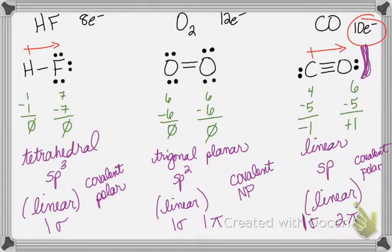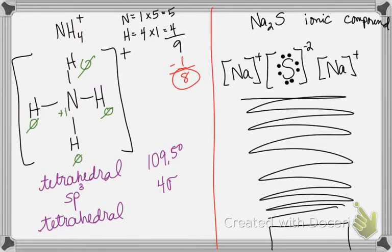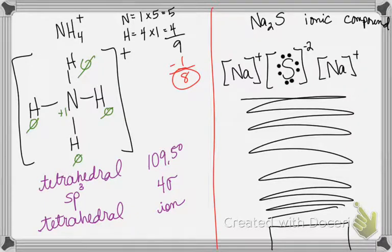Ammonium (NH₄⁺) — it's an ion, so we do not answer polar or nonpolar because it clearly has a charge. Just for argument's sake, if it weren't an ion — N with four H's, perfectly tetrahedral and symmetrical — it would be nonpolar. Sodium sulfide — it is ionic; it's a metal and a nonmetal.